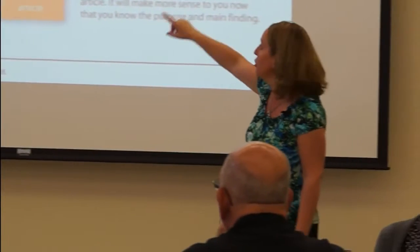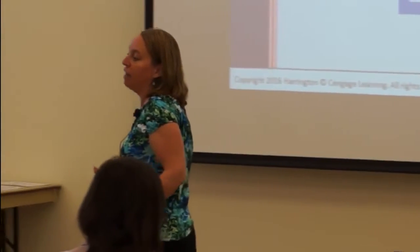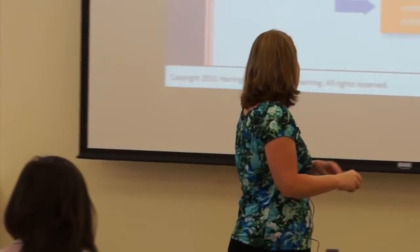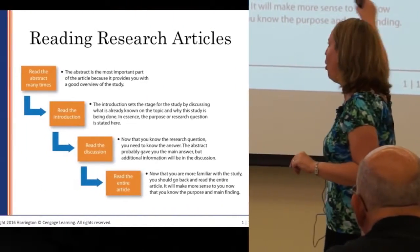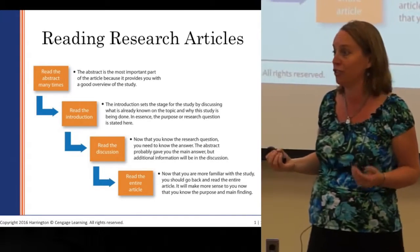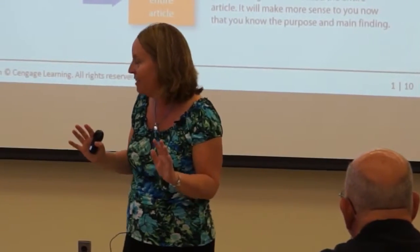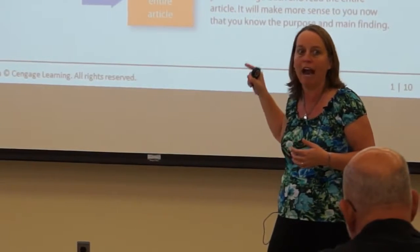After reading the abstract, you shift over to the introduction, because it really sets the stage for the article. It provides background information about the topic and tells you what the question is—why did they do this study, what do they want to know? Now you might think we'd go to the method or results next, but no—those are the most difficult sections to read. Instead, I tell students to skip all the way to the discussion, which is the last section. The intro and discussion are the easiest parts to read, and the discussion will tell you the answer to the question without all the statistics and details.